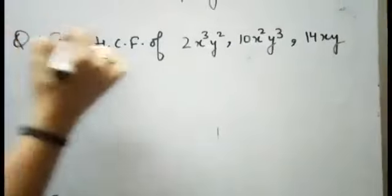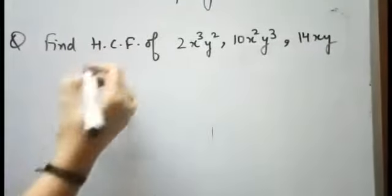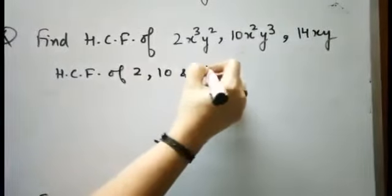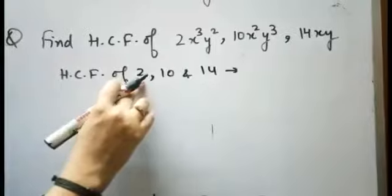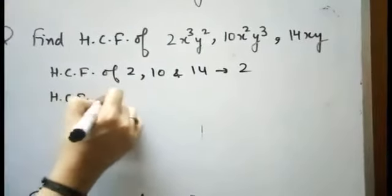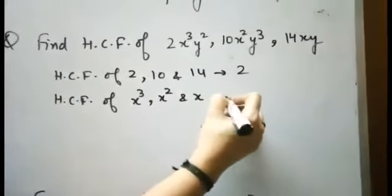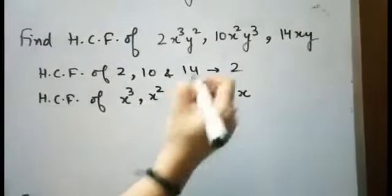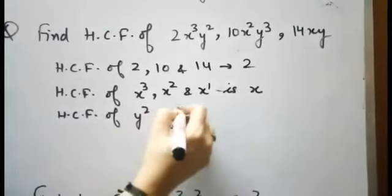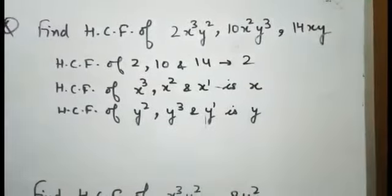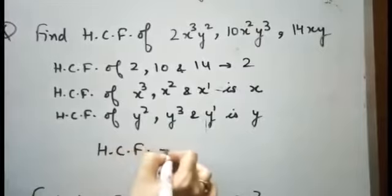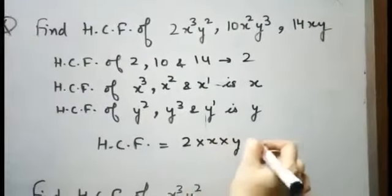Now the next question: find the HCF of three monomials. First, find the HCF of the constant numbers: HCF of 2, 10, and 14. The common factors are 1 and 2, so HCF is 2. Next, for the variable x: we have x³, x², and x — the least power is x¹, so HCF is x. For y: we have y², y³, and y — the least exponent is y¹. So the HCF of these three algebraic terms is 2 into x into y, that is 2xy.